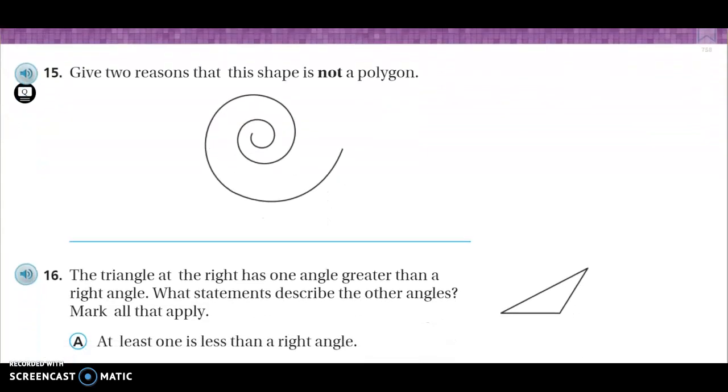Number 15. Give two reasons that this shape is not a polygon. Now if I was making the math book, I would have given you two lines to actually do that. So I would make a one and a two here and a one and a two. Two reasons that this shape is not a polygon. That's in the very first lesson of our unit 12. So you may have to go back and refresh your memory.